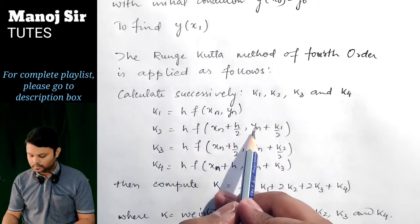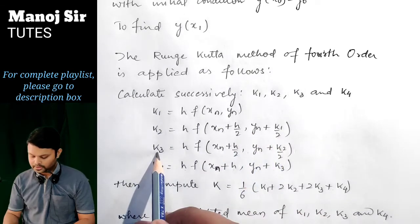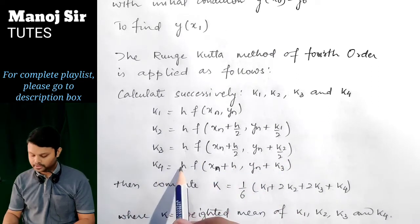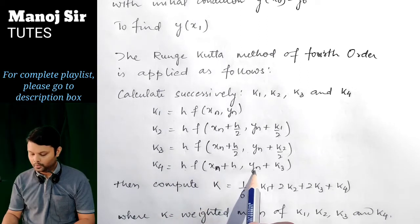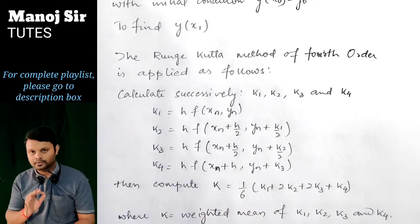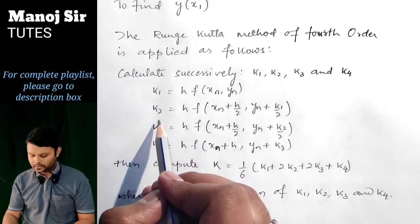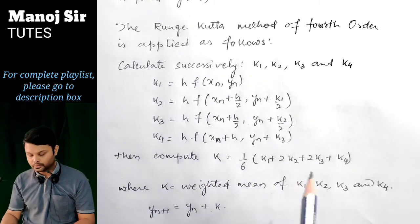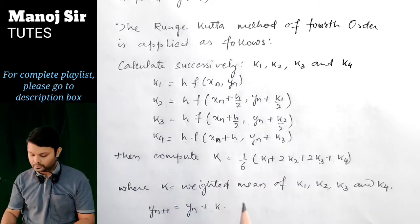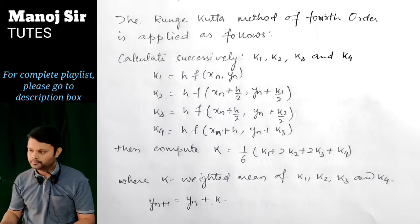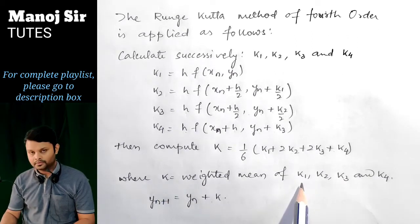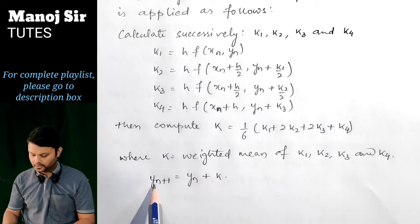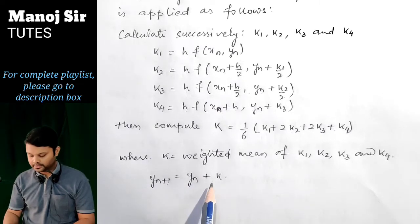The formulas are: k₂ = h·f(xₙ + h/2, yₙ + k₁/2), k₃ = h·f(xₙ + h/2, yₙ + k₂/2), and k₄ = h·f(xₙ + h, yₙ + k₃). These k₁, k₂, k₃, k₄ are all function values. After finding them, compute the weighted mean: k = (1/6)(k₁ + 2k₂ + 2k₃ + k₄). Then the next value is yₙ₊₁ = yₙ + k.